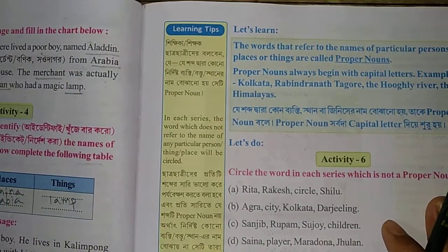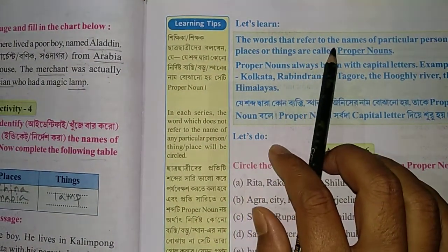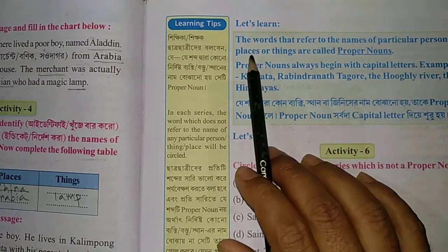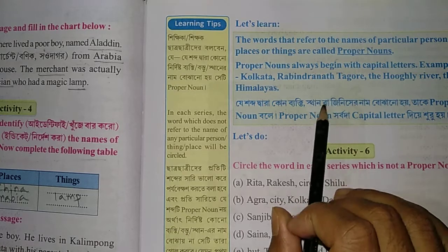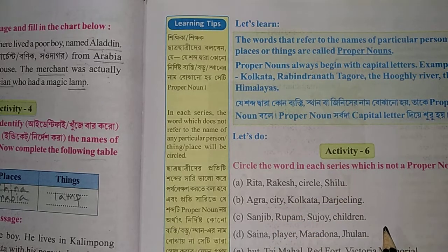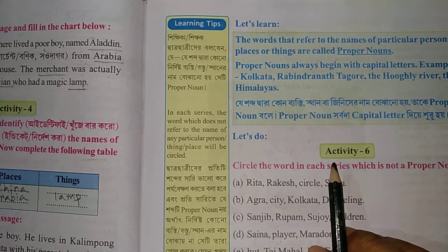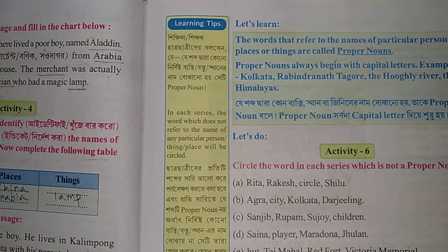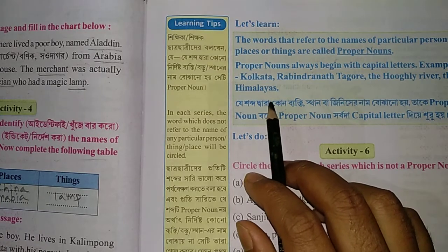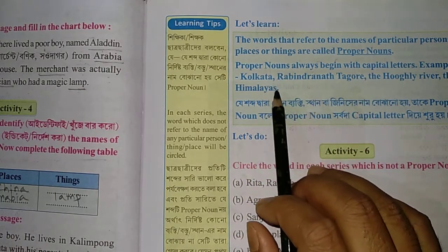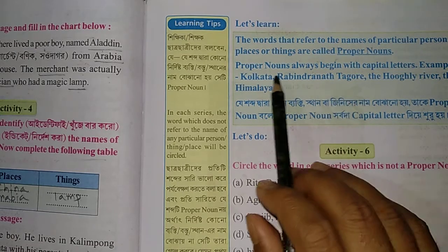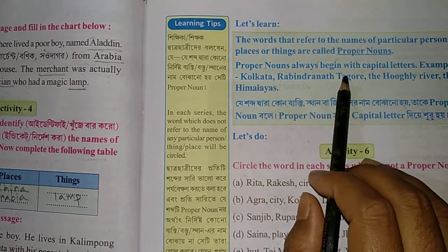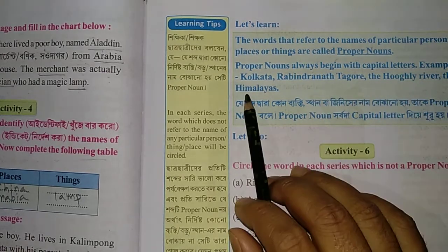Now, the words that refer to the names of a particular person, place, or thing are called proper nouns. Proper noun means a special name. Proper nouns always start with a capital letter. Any name of a person — Ram, Rahim, Hakeem — any name of a place or special thing is a proper noun. For example: Kolkata, Rabindranath Tagore, the Hooghly River, the Himalayas — proper nouns always begin with capital letters.